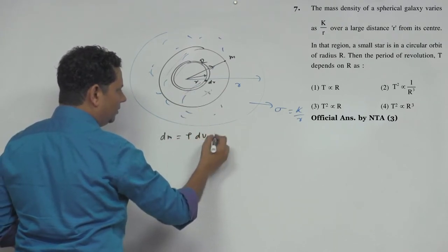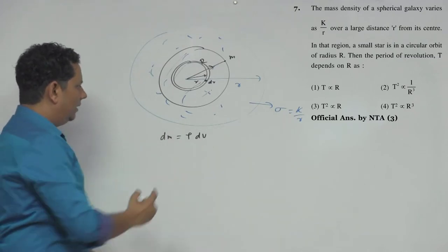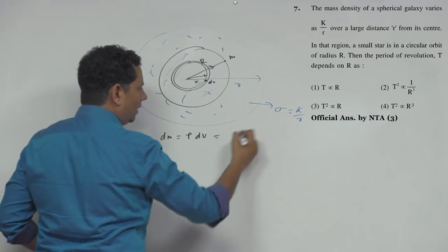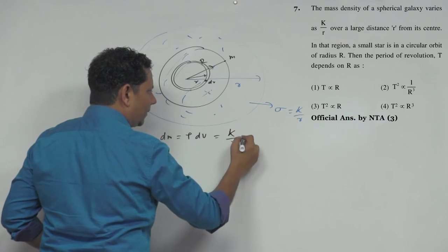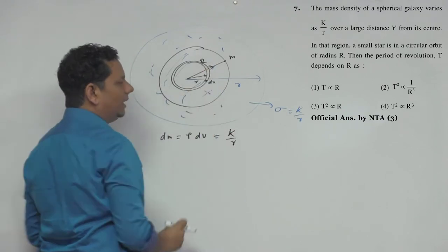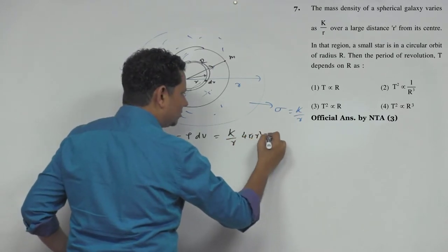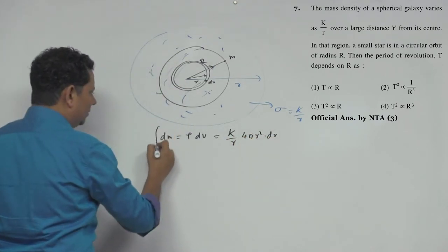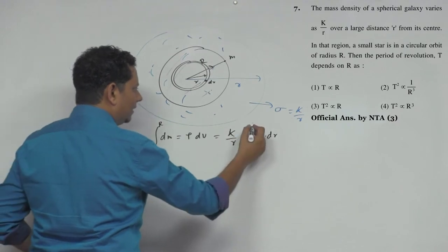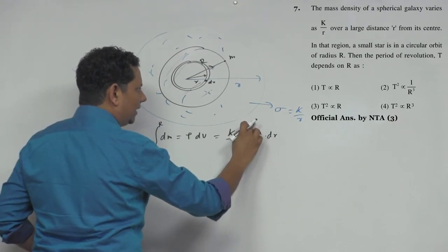We can write ρ as k by r multiplied by the volume. We're considering a spherical shell, so this will be equal to 4π r² multiplied by dr. If we integrate this from 0 to r, everything else is constant.